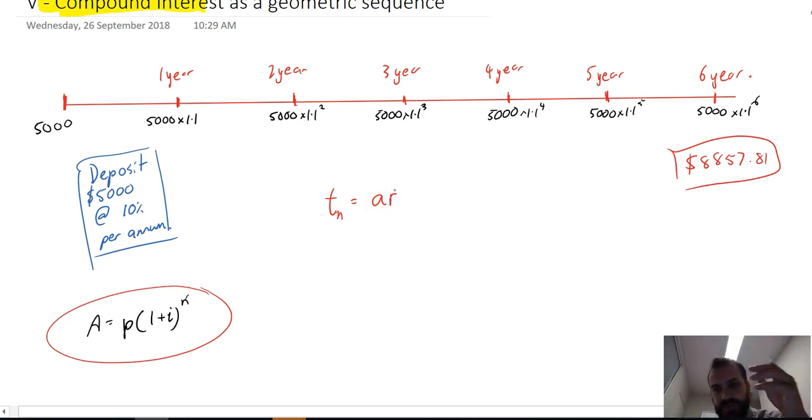...the growth rate, so the common ratio, which in this case is 1.1. So you have to be careful because it's not just 10%, it's 1 plus 10%, and then to the power of n minus 1. We've always said n here because it's been in there for one year, but we use n minus 1 because the first term is the money you first put in the bank account.